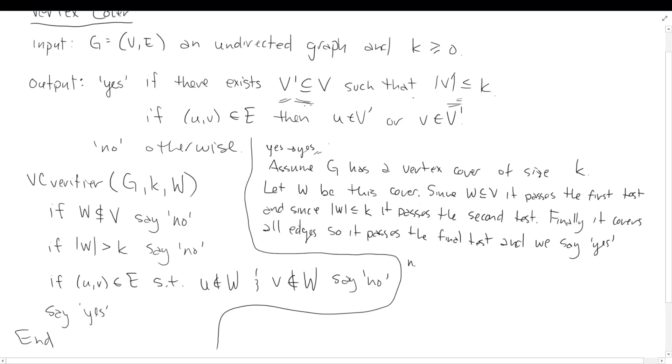So let's do the other branch then. No implies no. So we're just going to start out with the opposite assumption. Assume we have no vertex cover. Then we always start this out by assuming we're going to pass the first two tests, so that we pass as many tests as possible. So we'll assume that W is a subset of V and that it has the appropriate size. Then it can't possibly cover. So there must be an uncovered edge and we end up saying no. So again, this verifier is sufficient to argue that vertex cover is in NP.